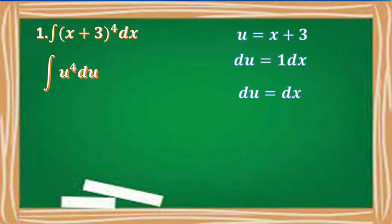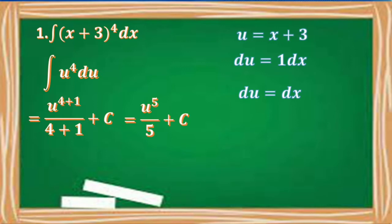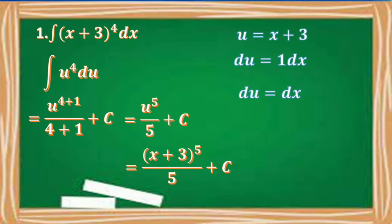Applying the anti-differentiation rule, we have u raised to 4 plus 1 over 4 plus 1 plus c. Adding the exponents and the denominators, we have u to the 5th over 5 plus c. Then substituting back x plus 3 for u, we have the quantity x plus 3 to the 5th all over 5 plus c.